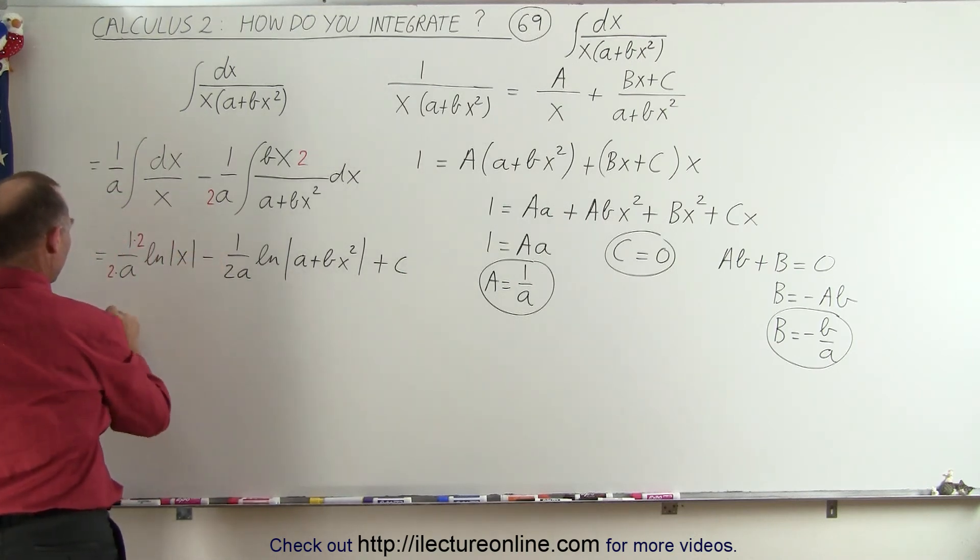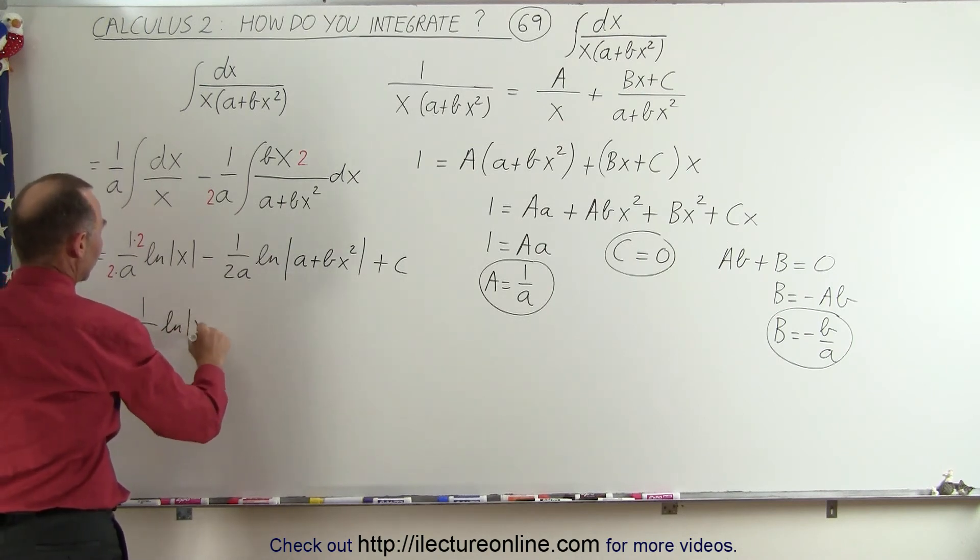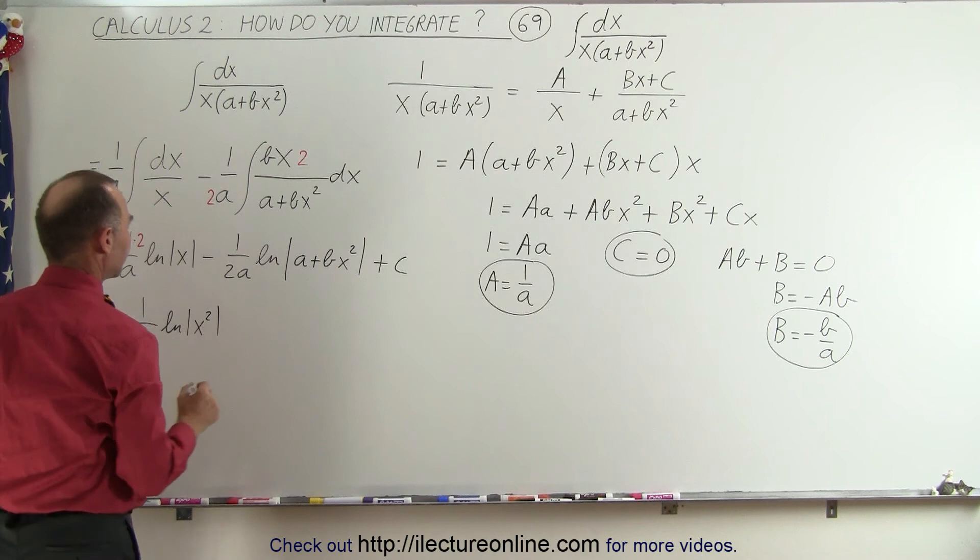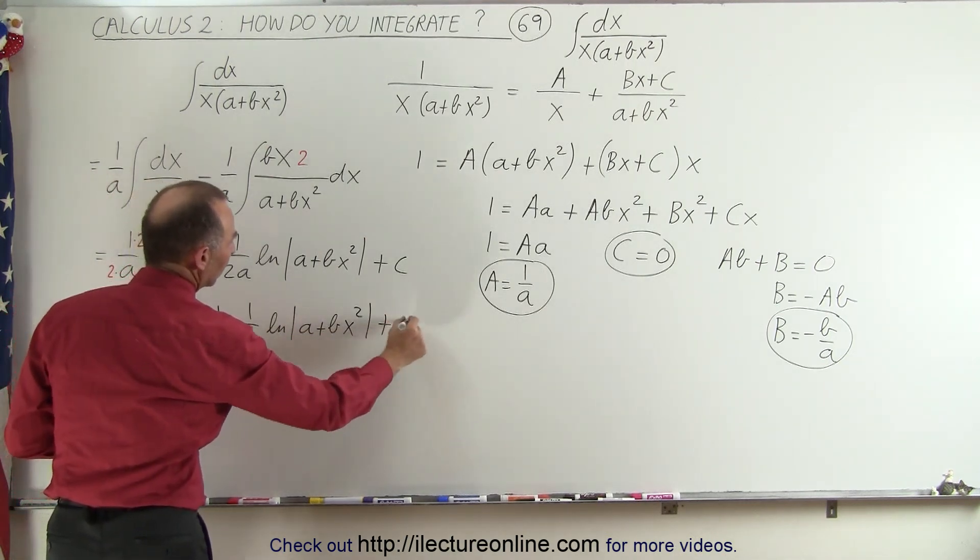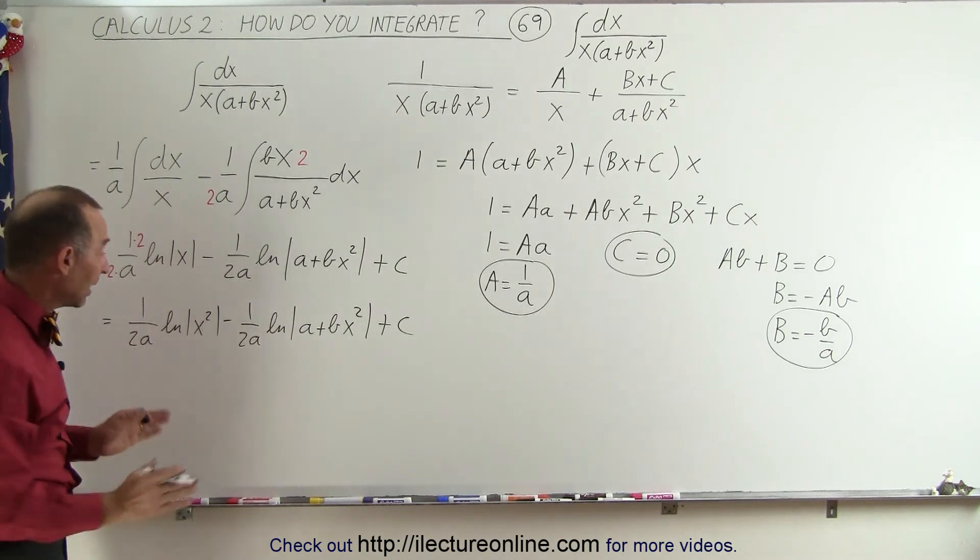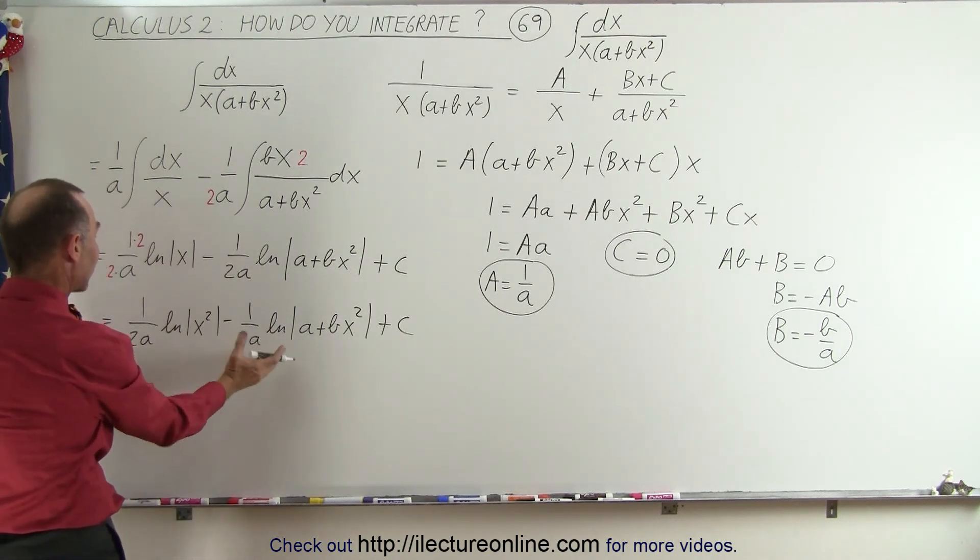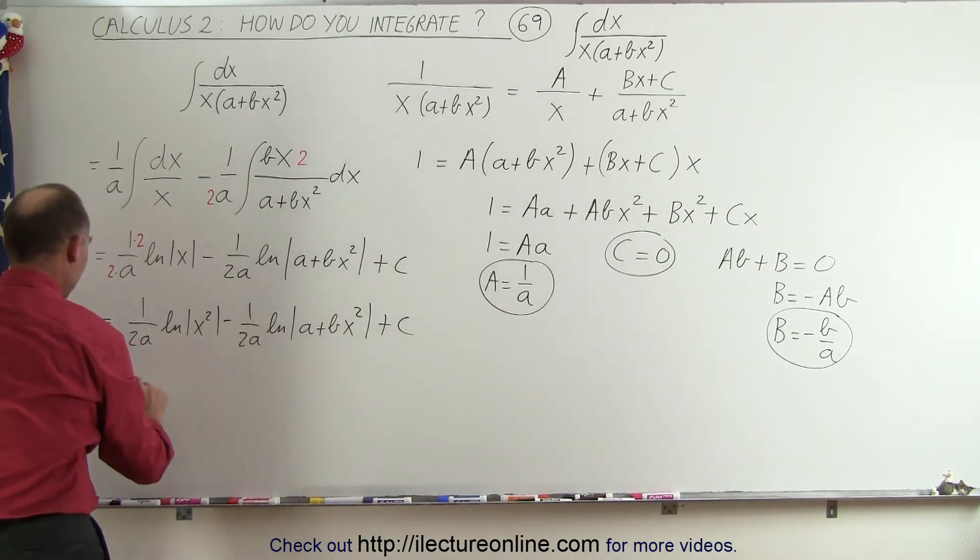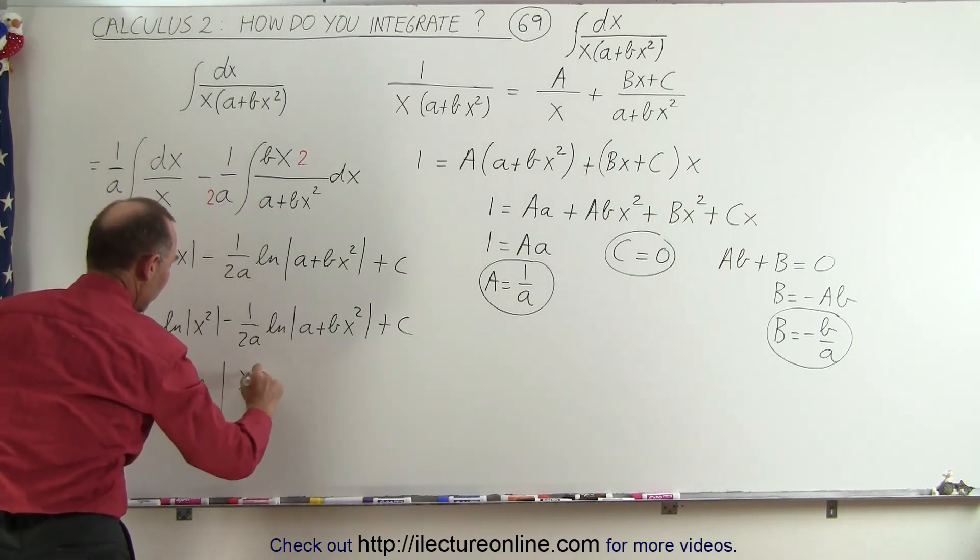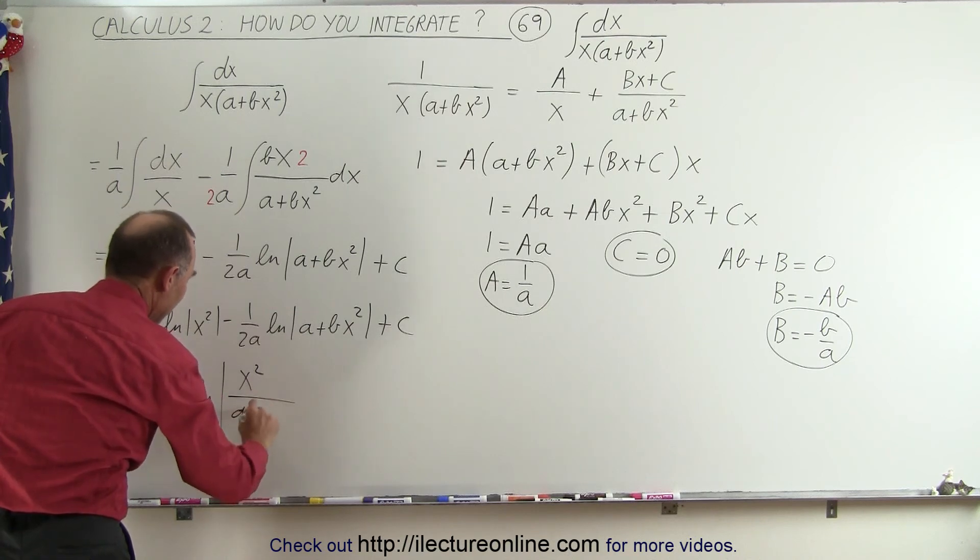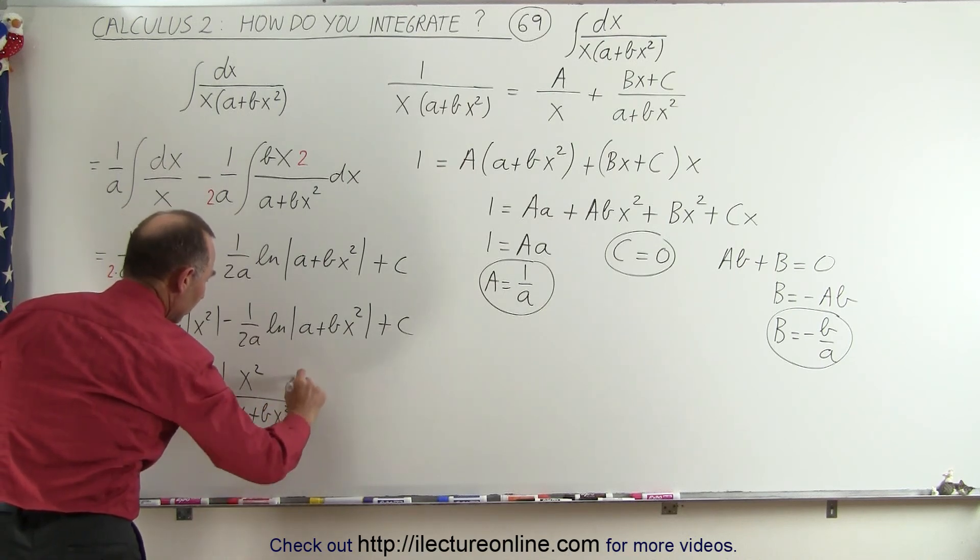So this can now be written as 1 over 2a times the natural log of x squared minus 1 over 2a plus a constant of integration. And now that I have the same constants here, I can factor out a constant, and this can be written as 1 over 2a times the natural log of x squared divided by a plus bx squared plus a constant of integration.